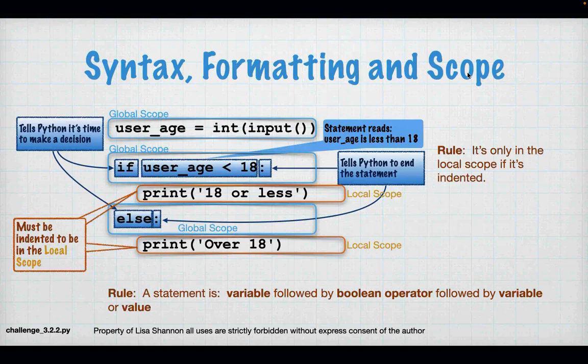We see that with userAge. userAge is a variable — we know because on the previous line it's on the left-hand side of a single equal sign. In the if statement we have a Boolean operator — in this case the less-than sign — and then a value. That value could also have been another variable. This is the basic format of the if statement to make a decision.